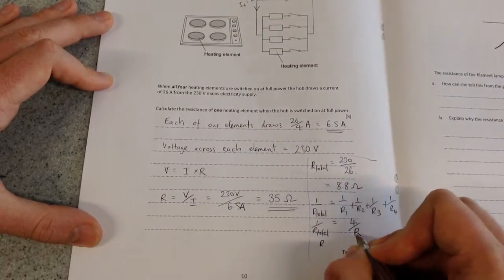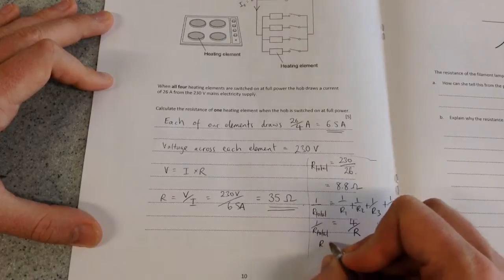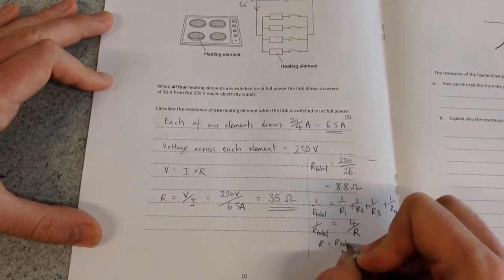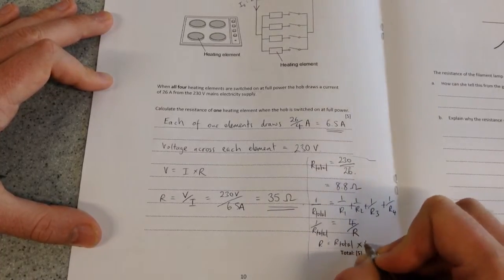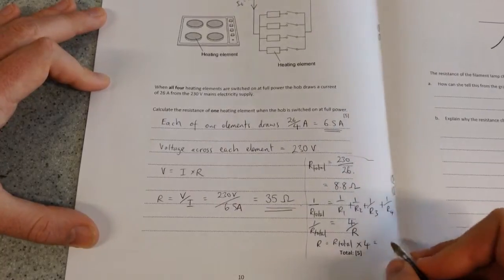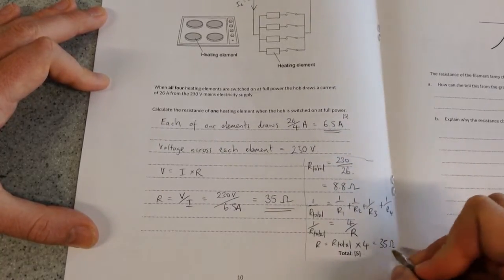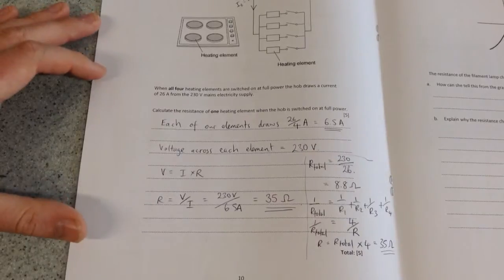If you then work this thing out, you'll find that the R that we're looking for is going to be R total multiplied by 4. Which will give you this answer of roughly, to two significant figures, 35 ohms.